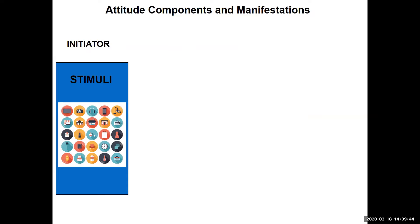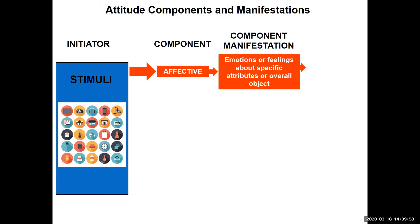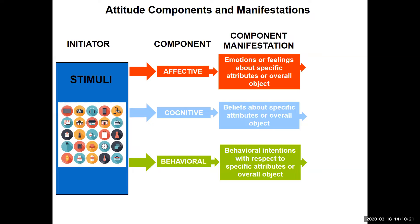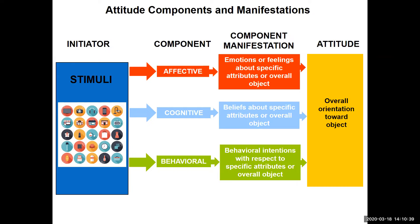There's a stimuli that comes into your area of exposure, and that stimuli initiates three different components if you pay attention. There's an affective component — the emotions or feelings that you have about a particular object, idea, or product. The second is the cognitive component — the beliefs that you have with respect to a particular product or idea. And the last one is behavioral — your intentions with respect to the actual product or idea. All three components go into making up the overall orientation toward the object, and that becomes the attitude.